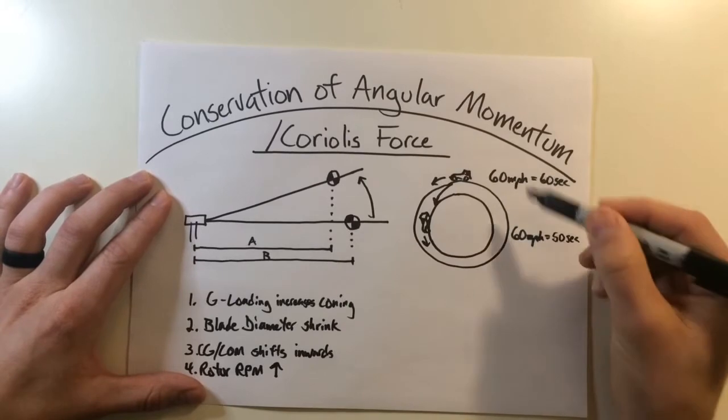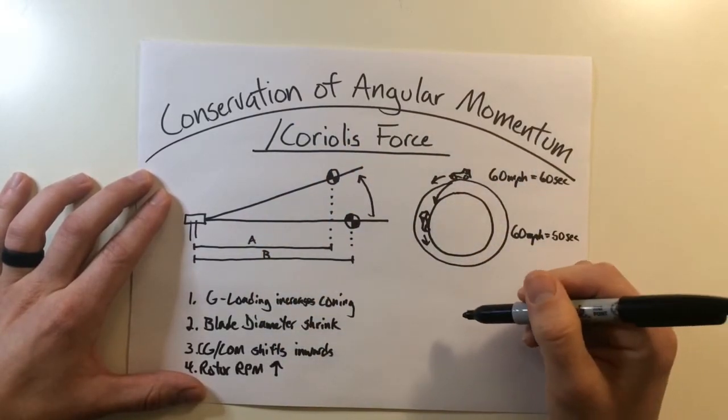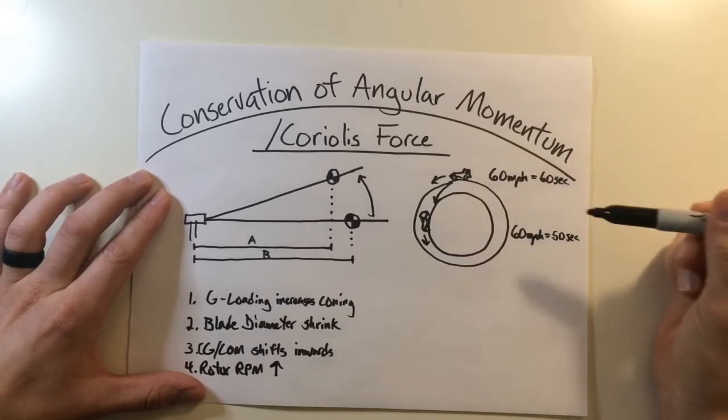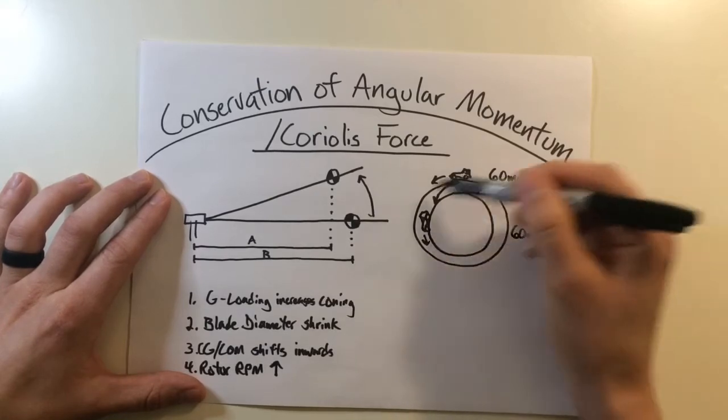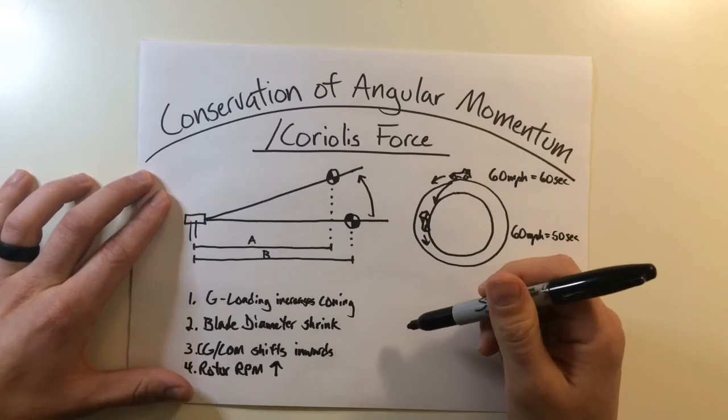So he's maintaining the same conservation of angular momentum going around the track, but now he has a shorter distance. And so it's increasing his rounds per minute from 60 seconds down to 50 seconds. He can make more RPMs than when he maintained on the outside of the track.